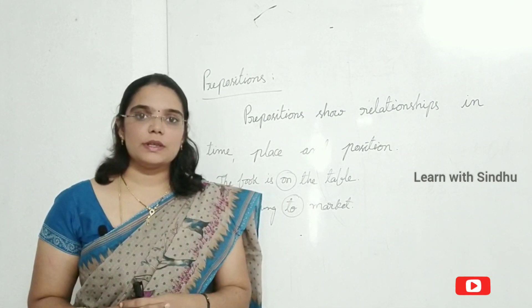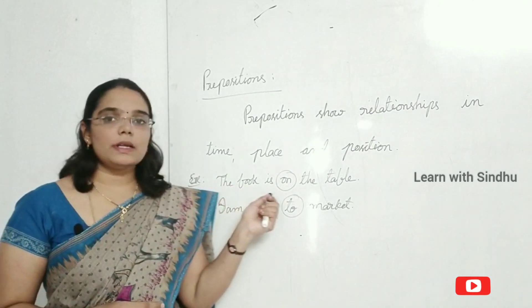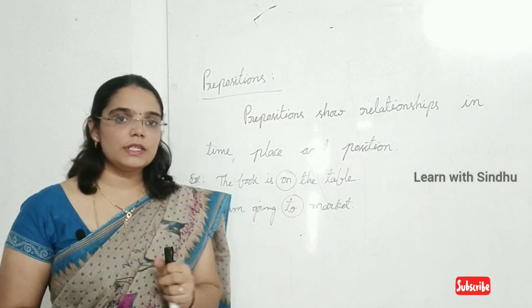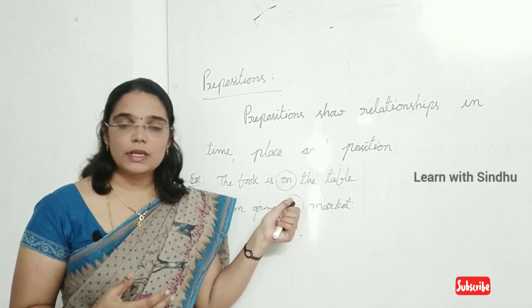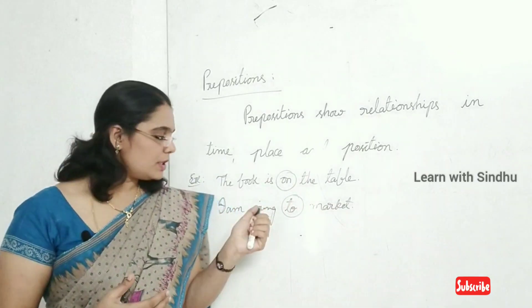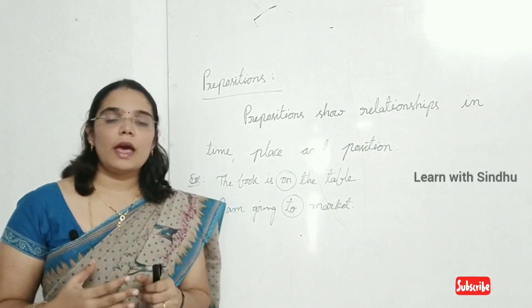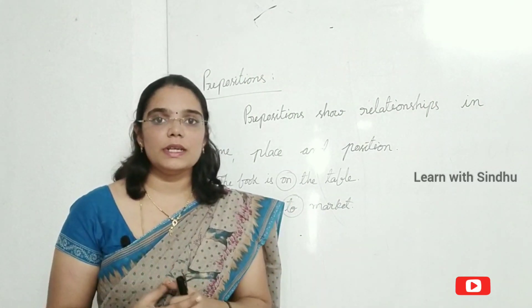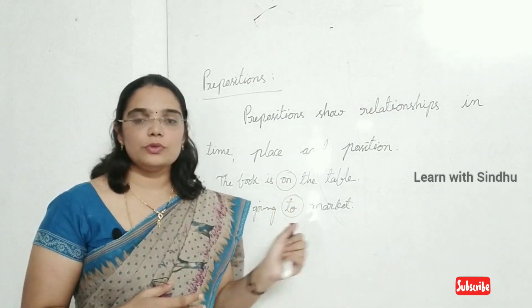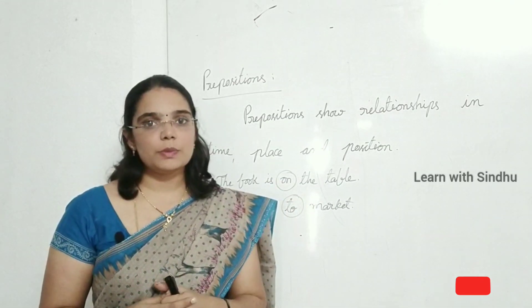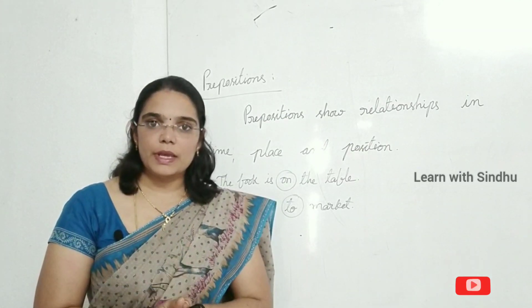The next one is prepositions. Prepositions show relationships in time, place, and position. For example: The book is on the table. What is the preposition here? 'On' — it shows the relationship in position. Where is the book? The book is on the table. 'On' is the preposition. And: I am going to market. Here 'to' is the preposition. Examples of prepositions include: on, to, from, in. Prepositions show relationships in time, place, and position.